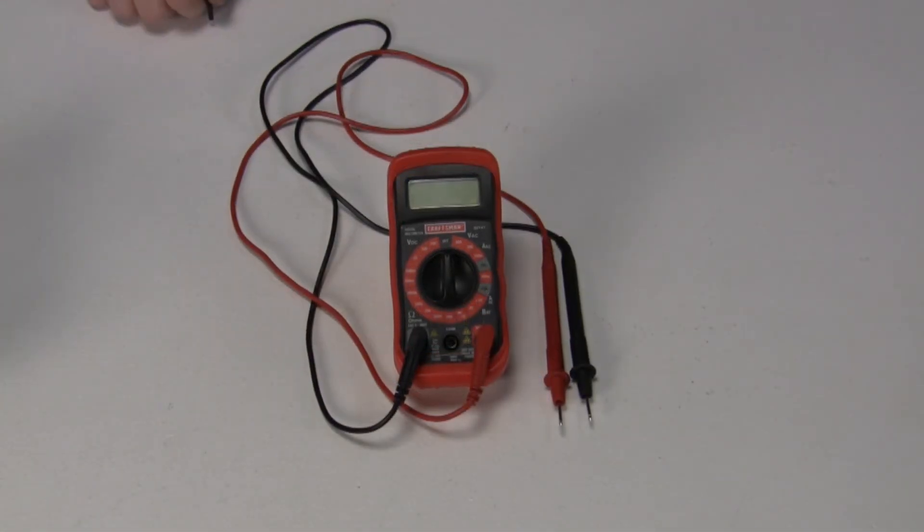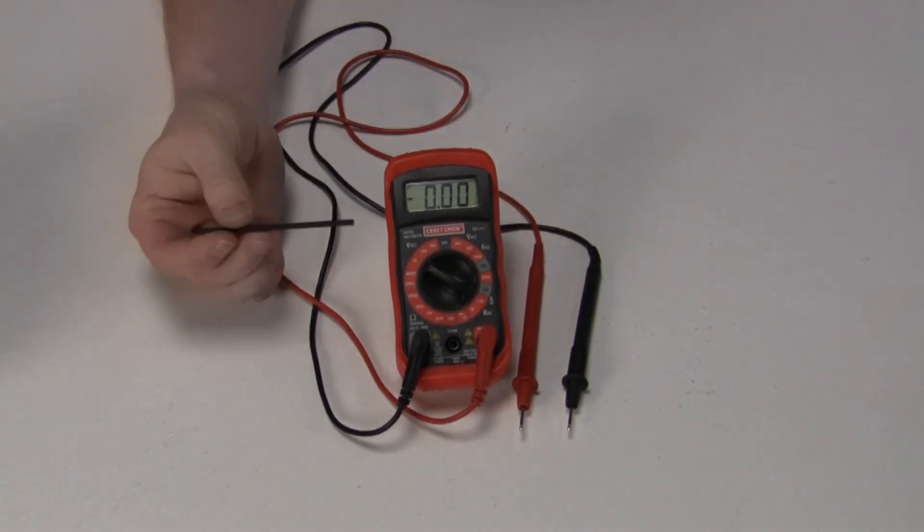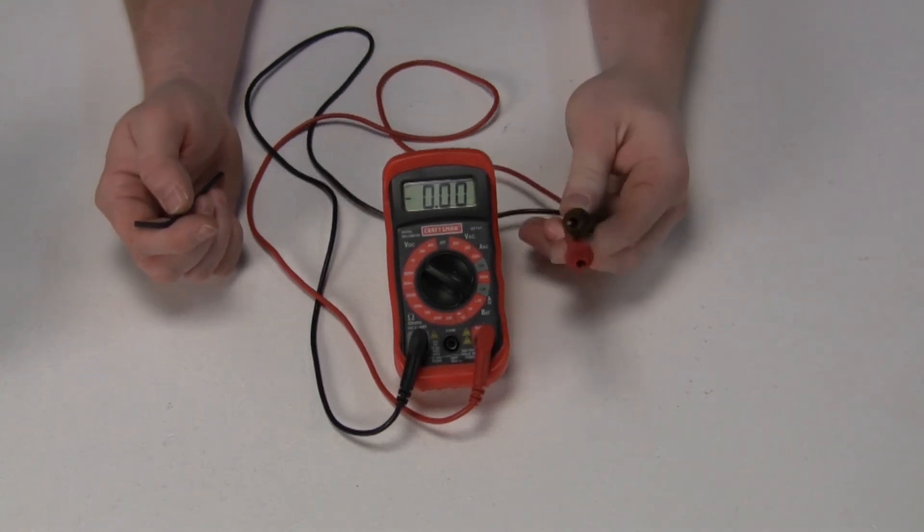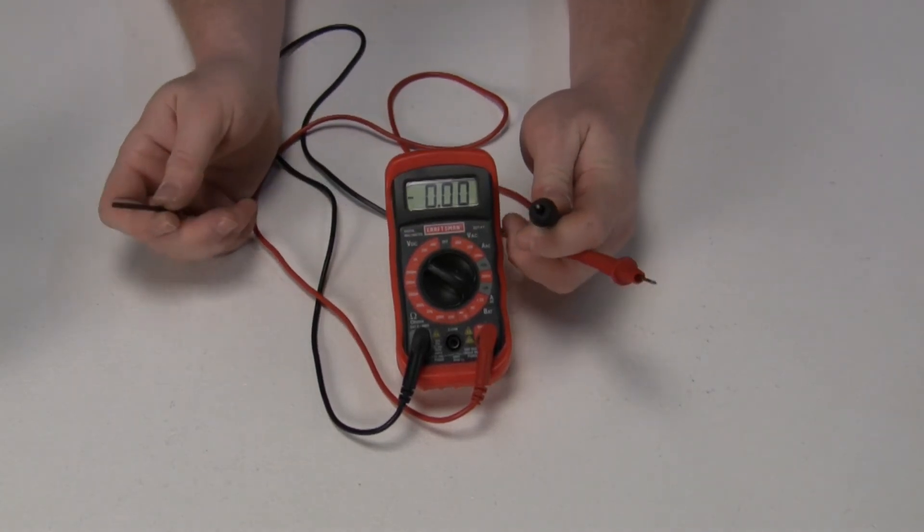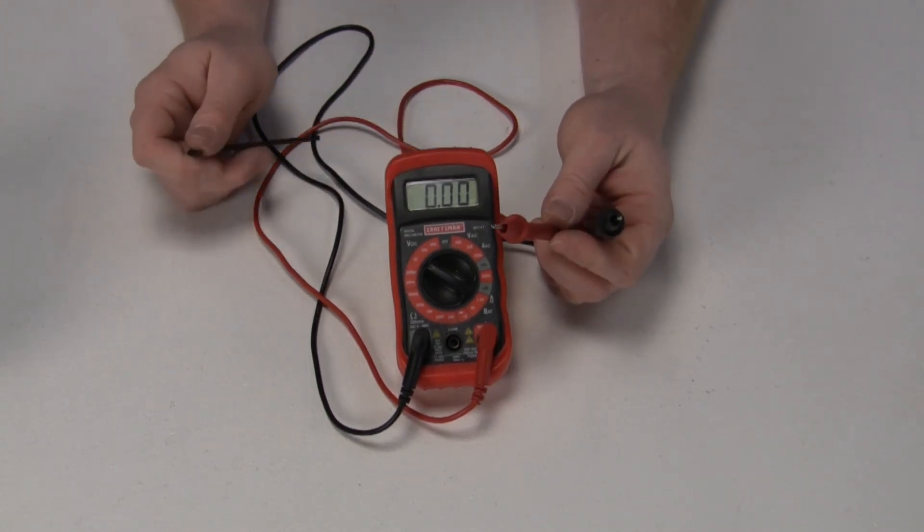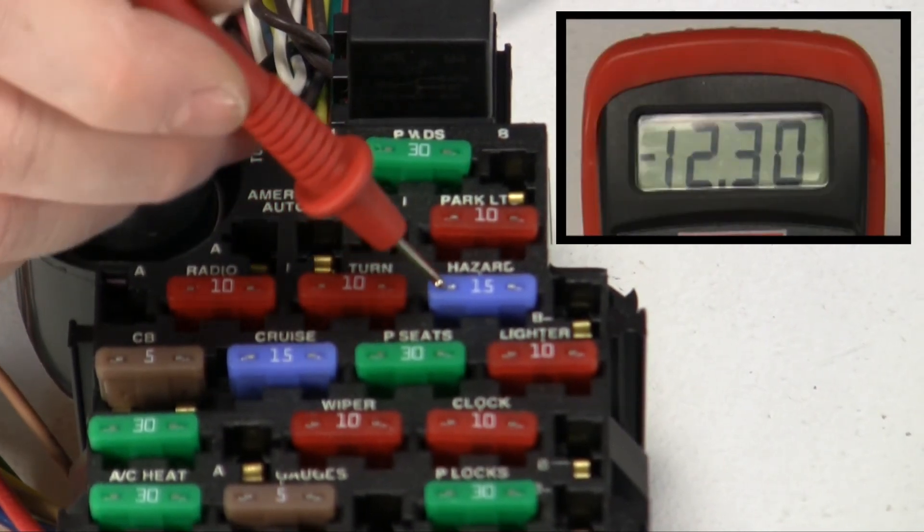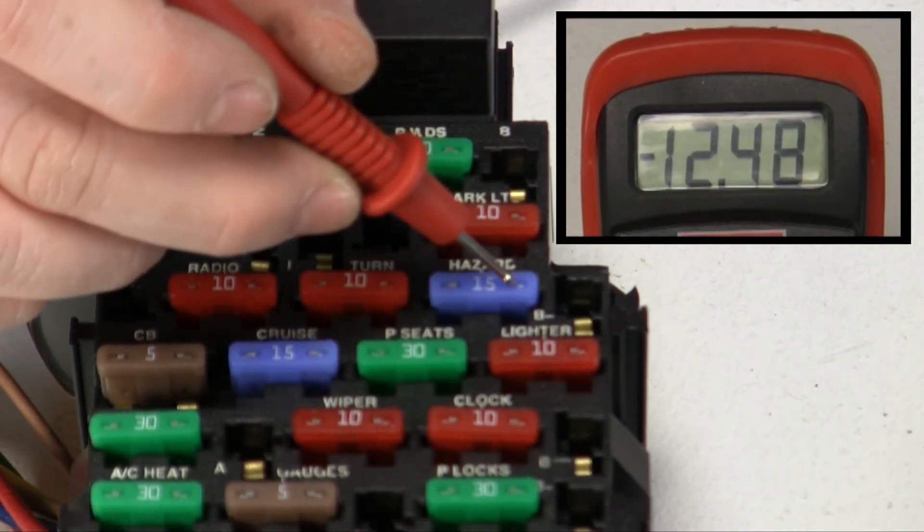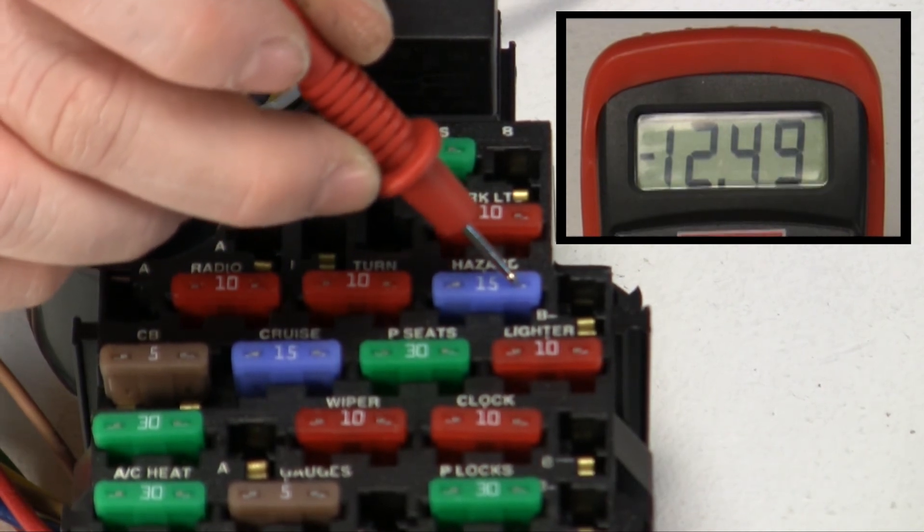For this first example of checking a fuse with a multimeter, we're going to set our meter to DC volts. We're going to put it on the 20 range because it's a 12 volt system. You're going to ground the black leg directly to battery ground. We're going to use the red probe to actually check for power. Using the multimeter, we go to the input side of the fuse. It shows 12.5 volts on the input side and on the output side of the fuse, 12.5 volts. We know that fuse is good.